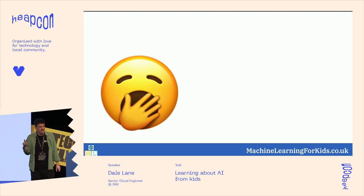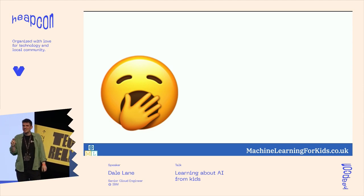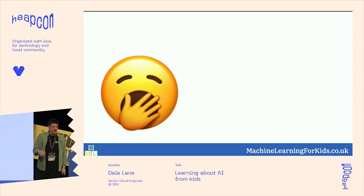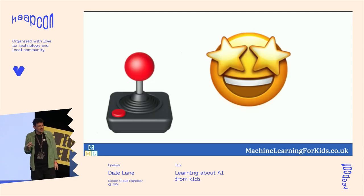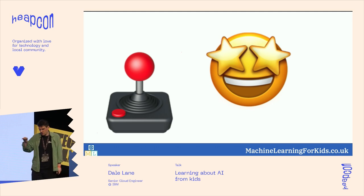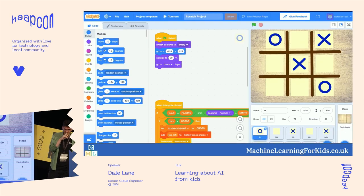I love doing projects like Pac-Man with a class after they've done something like the chatbot one, because there's always one really honest kid who points out that typing in all the training examples for the chatbot was really boring compared with playing a game. But that's an important lesson — if you can collect training examples as a byproduct of something you're going to enjoy doing, or something you're already doing, that's going to make a much more successful project. Collecting training data being the most boring, tedious, time-consuming part of a project is not a bad lesson to learn.